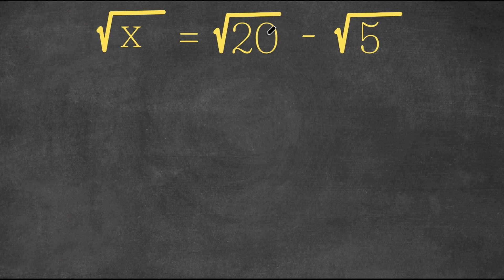So what I'm first going to do is I'm actually going to simplify this radical here, the square root of 20. Well, to do that, what are some factors of 20? We have 5 times 4, right?